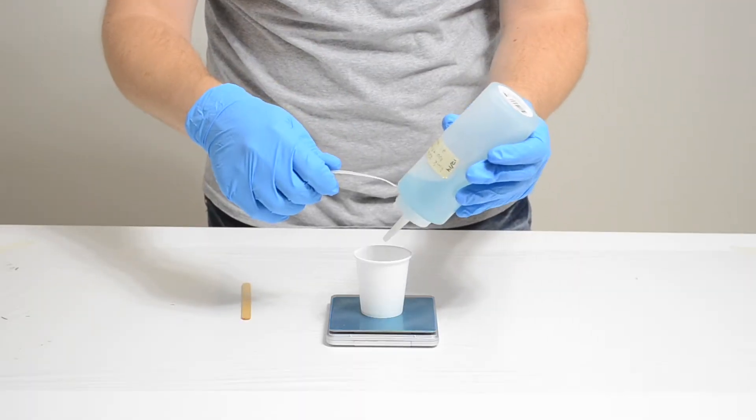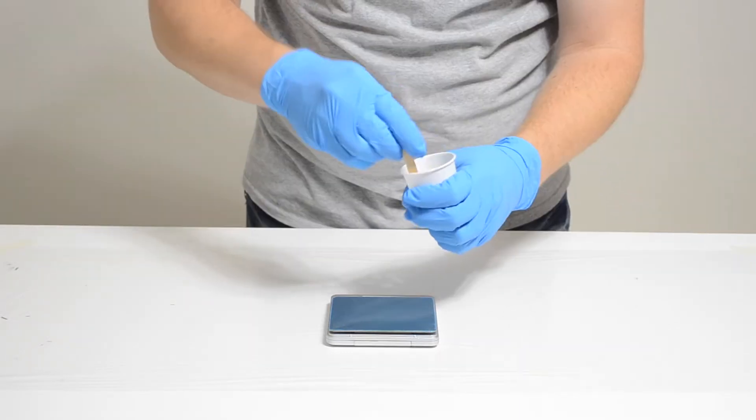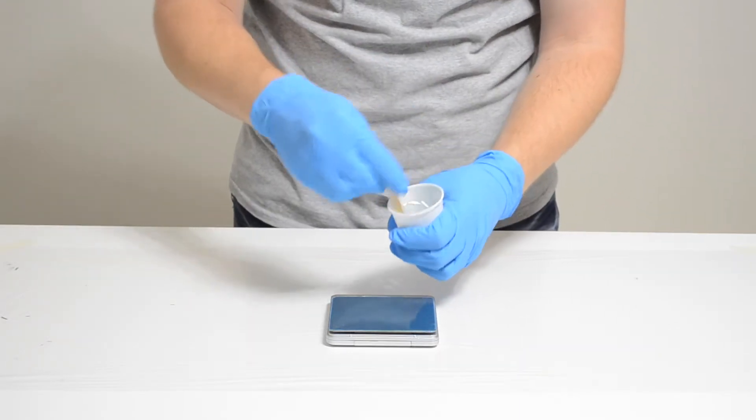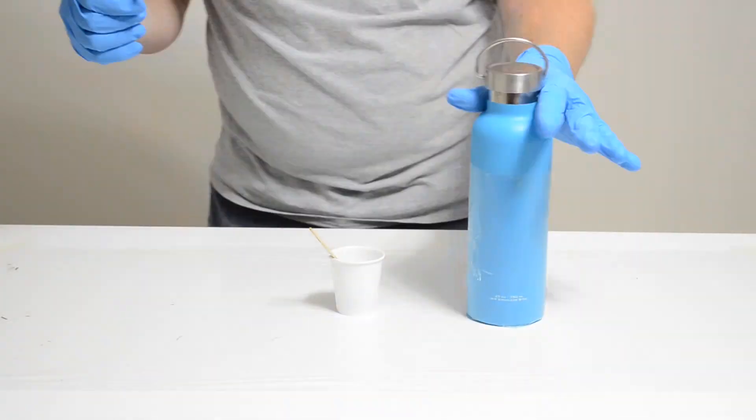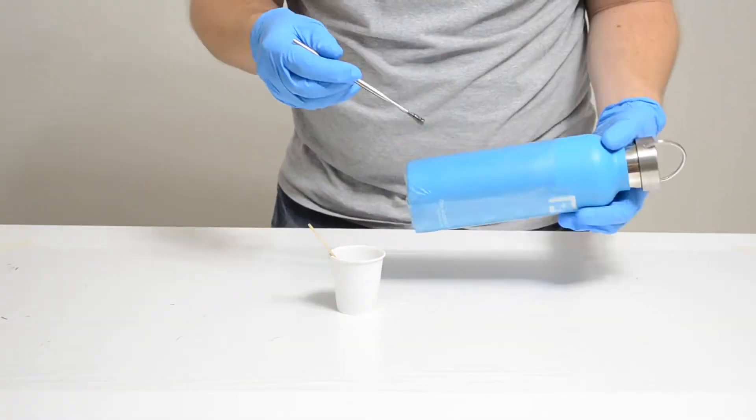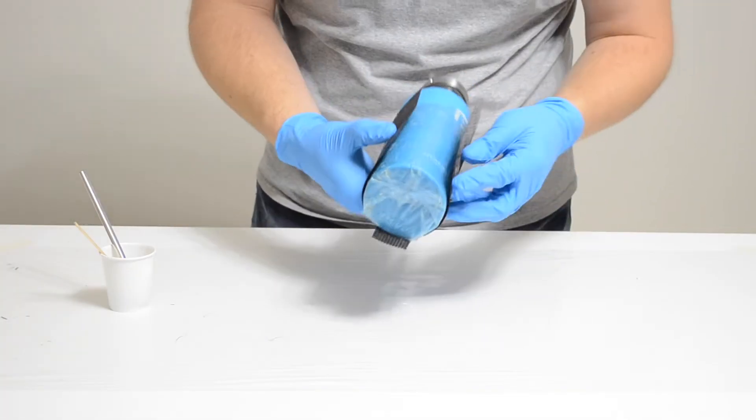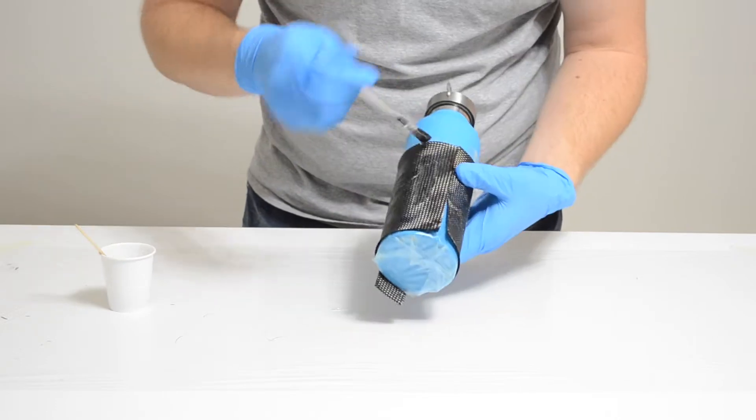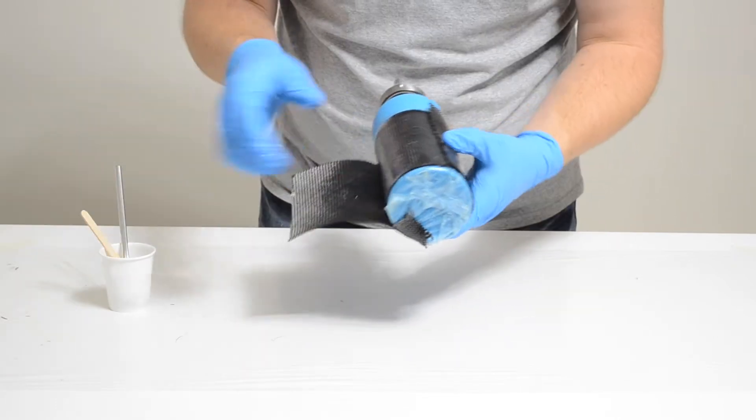Quick tip: if you're not sure how much epoxy to mix for a project, weigh your fabric. The weight of the fabric plus about 10 or 20 percent, that's how much total epoxy you're going to need to finish that layup. It's important to put down a generous coat of epoxy before you lay down your first ply and make sure there are no air bubbles. I found that when I do this, I usually get a very clean pinhole-free surface on the tool side of my part.